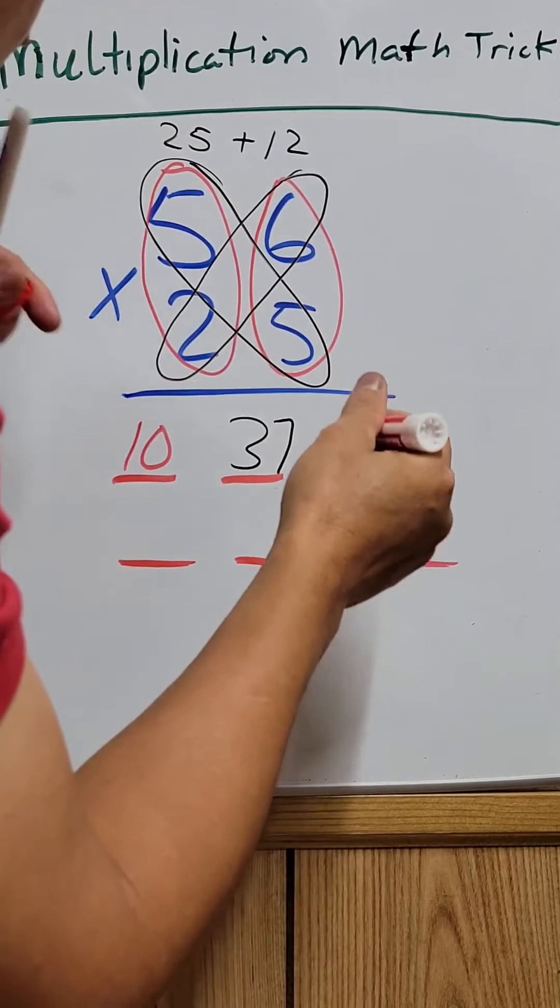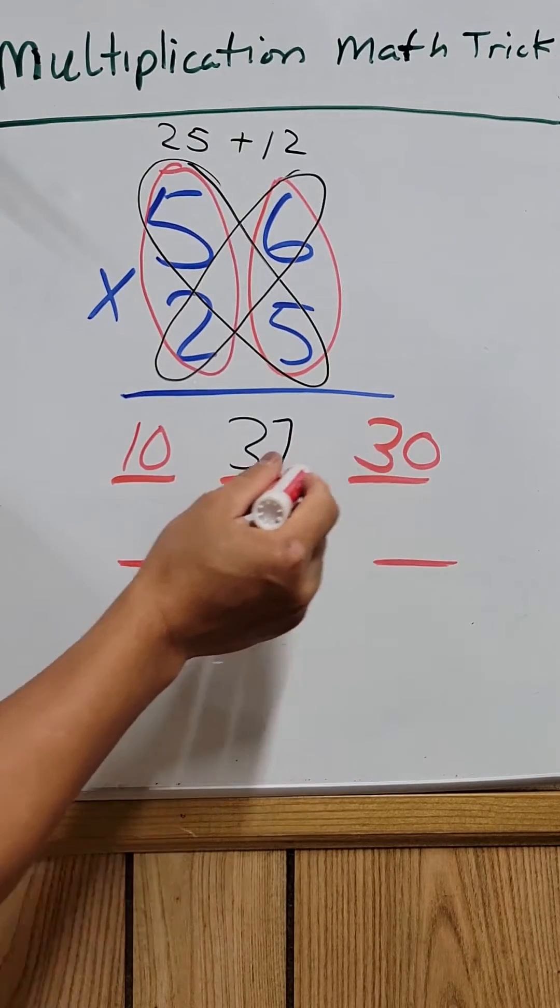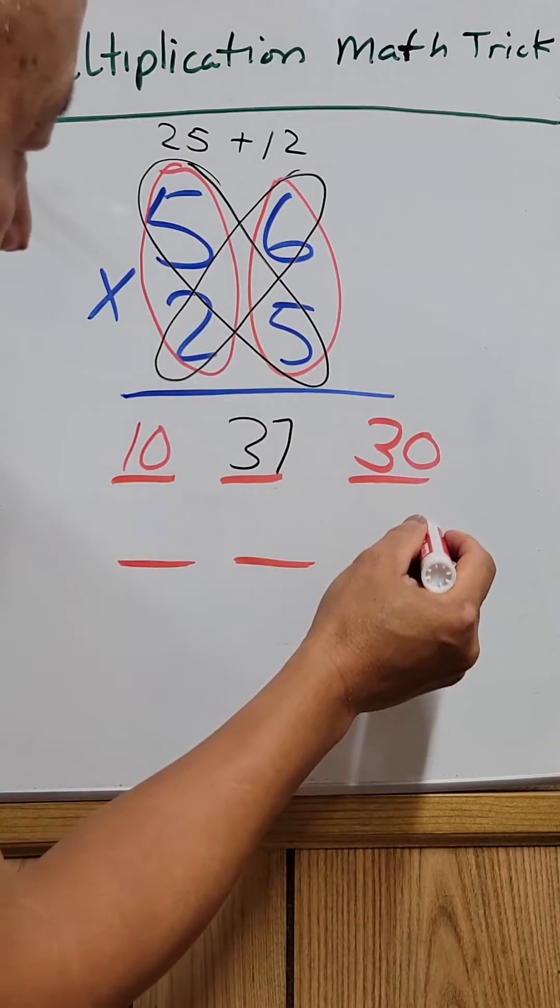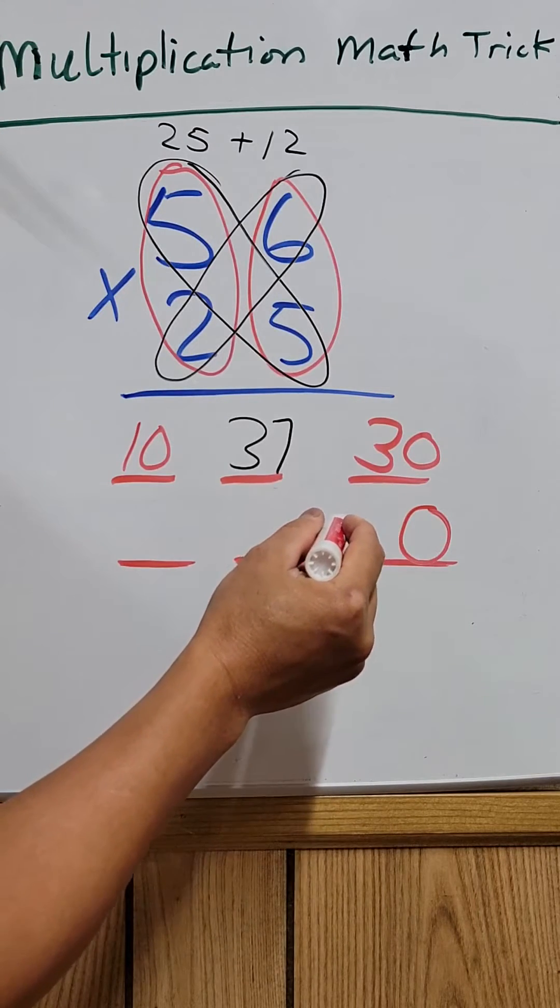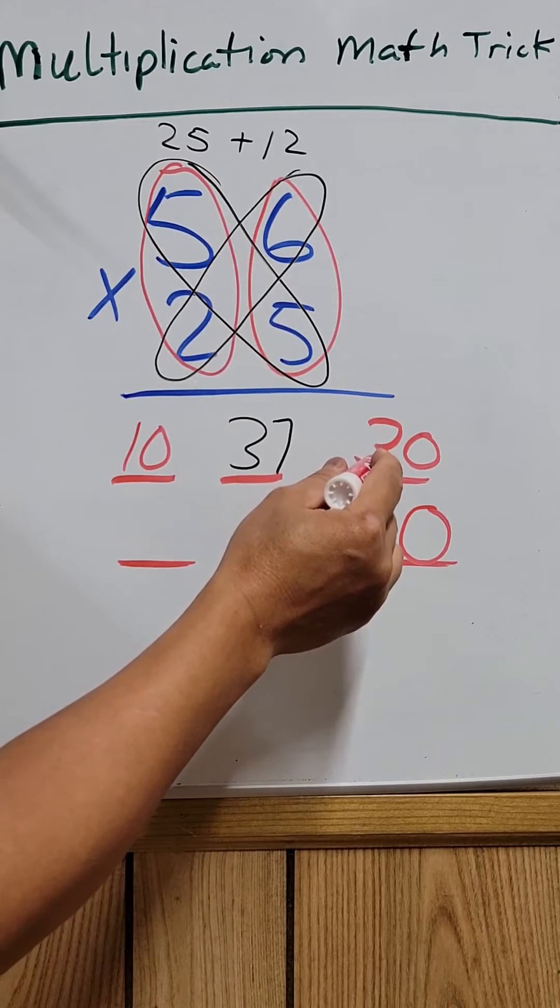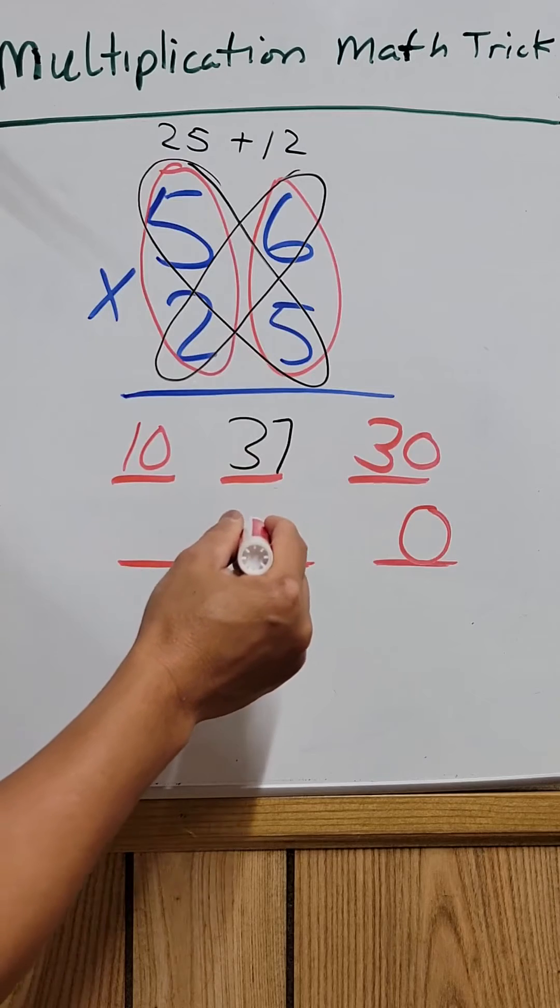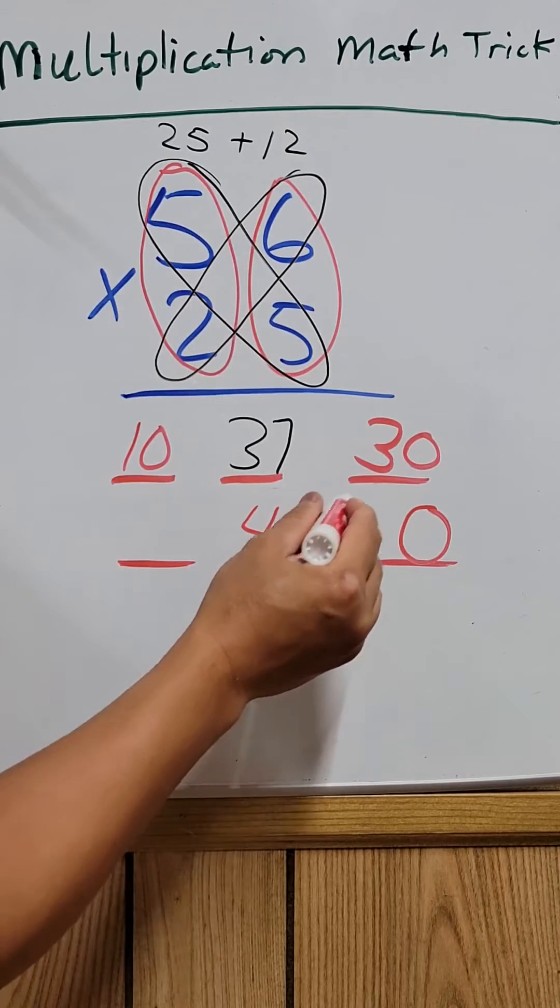Remember, the last two slots are each one digit. So you drop the 0 down. And then the 3, you add to the 37 to get 40, you carry it over.